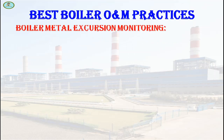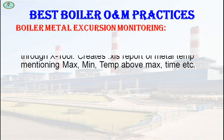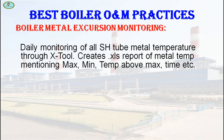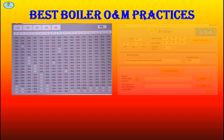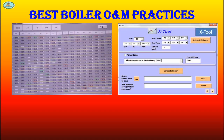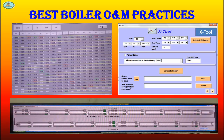Next one is boiler metal extrusion monitoring. Daily monitoring of all superheater tube metal temperatures is done through an X-tool or by creating an actual report of metal temperature. Generate reports for different temperature zones of the boiler for monitoring metal extrusion and take necessary action to avoid or minimize the impact of metal extrusion. Some pictures of the X-tool and reports are shown for reference. If the X-tool is not available, an Excel file can also be created for comparing all temperatures.